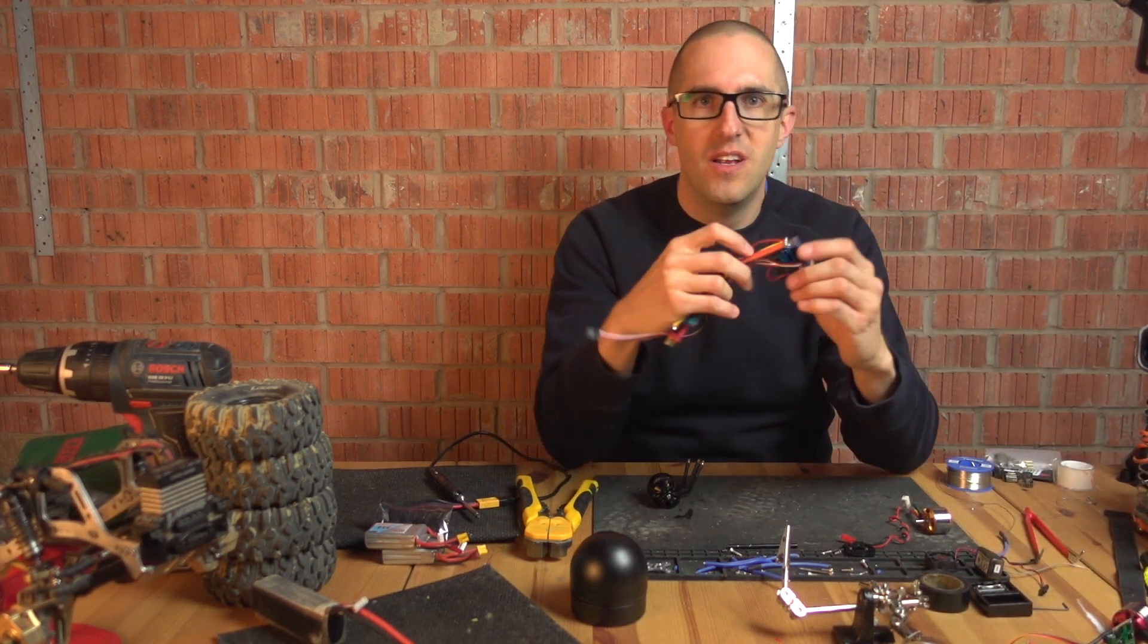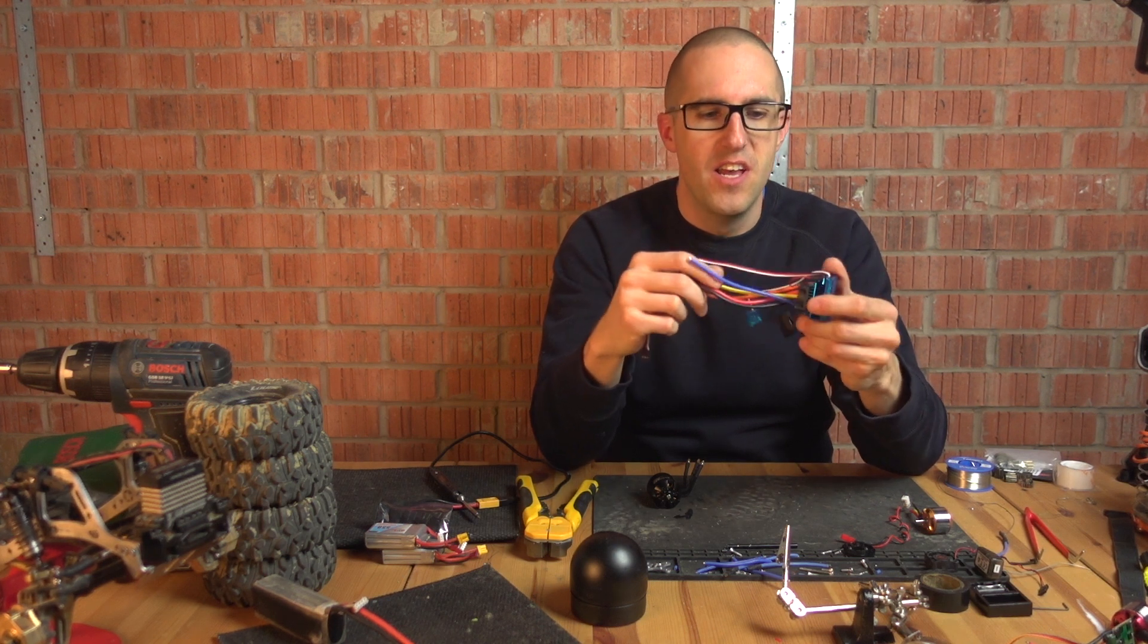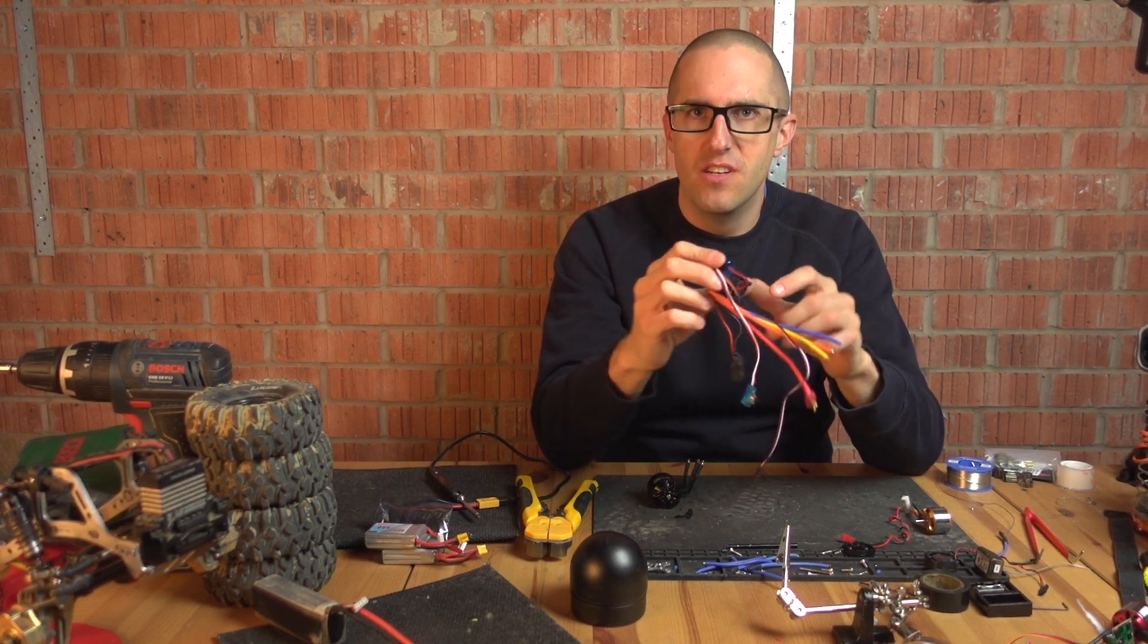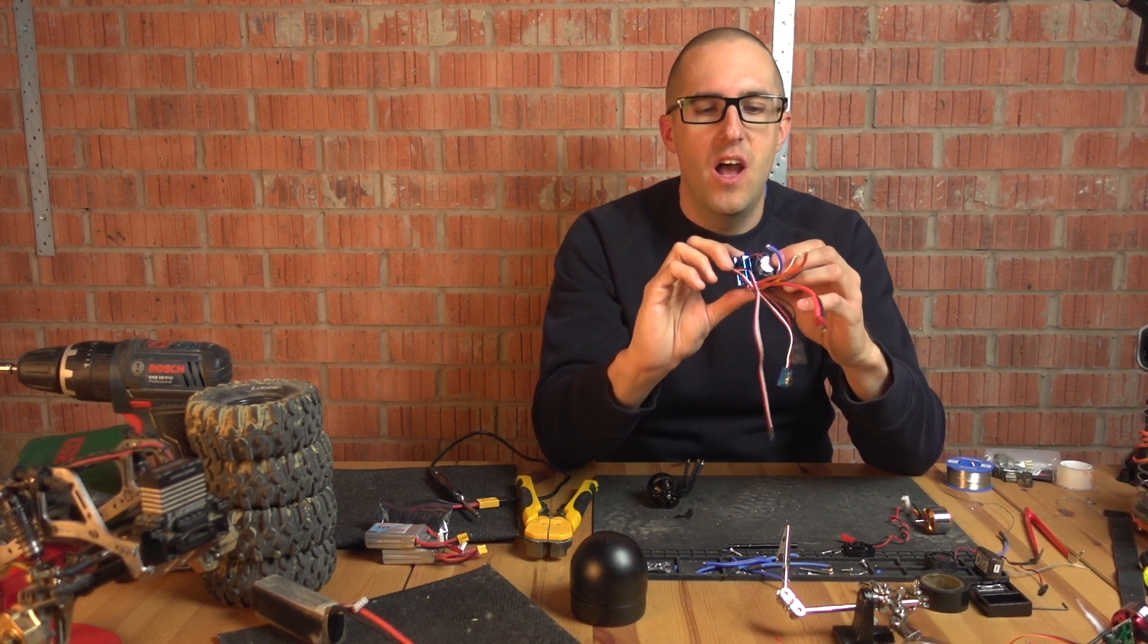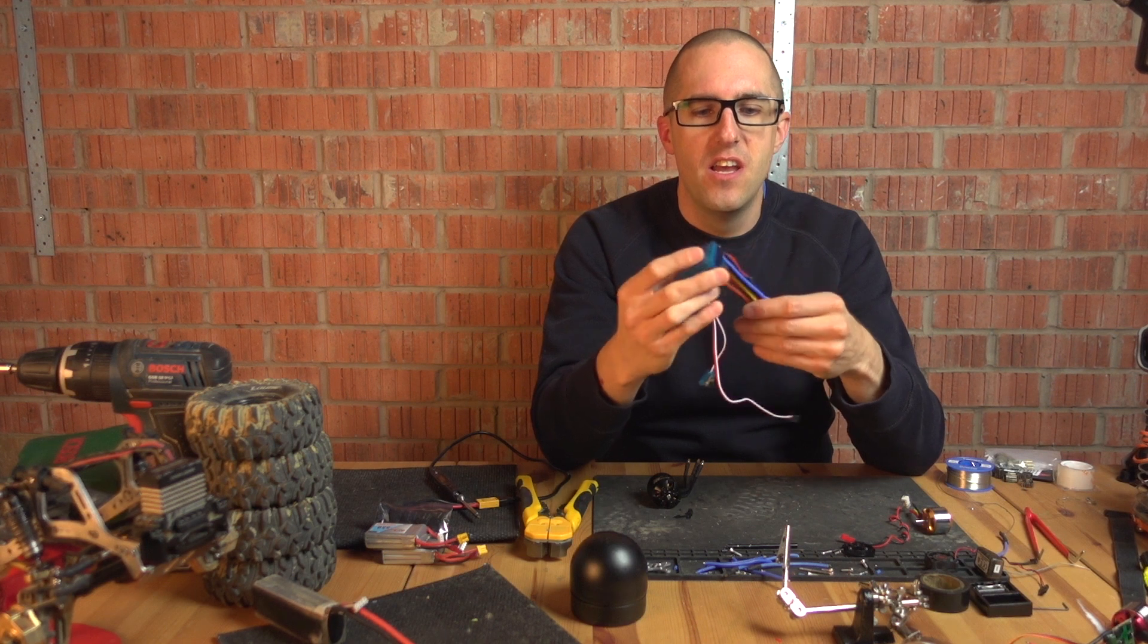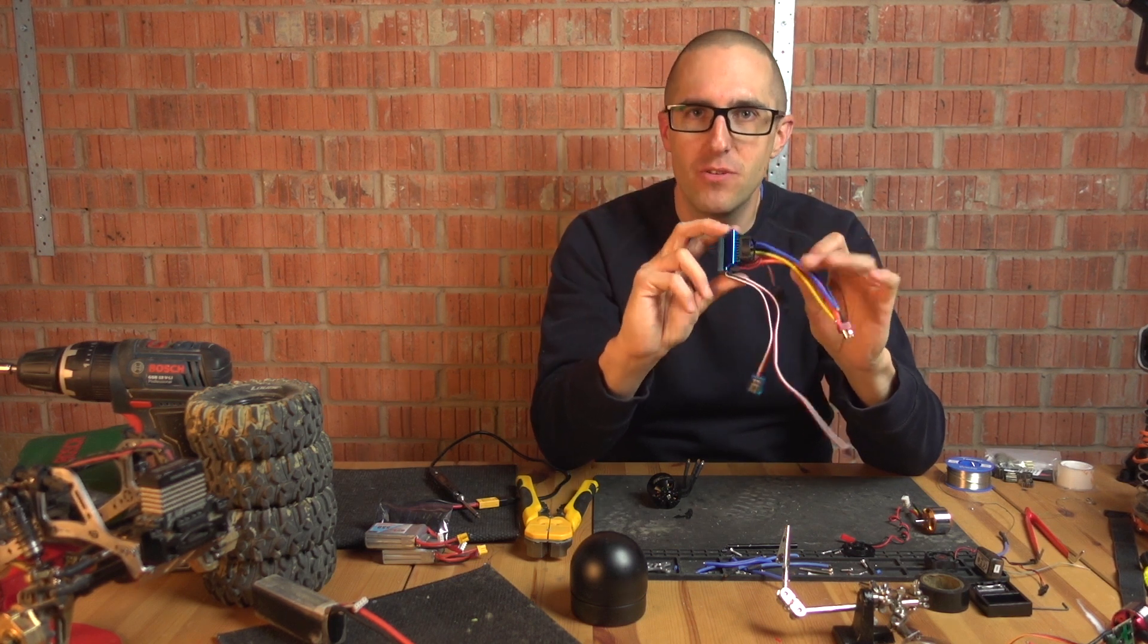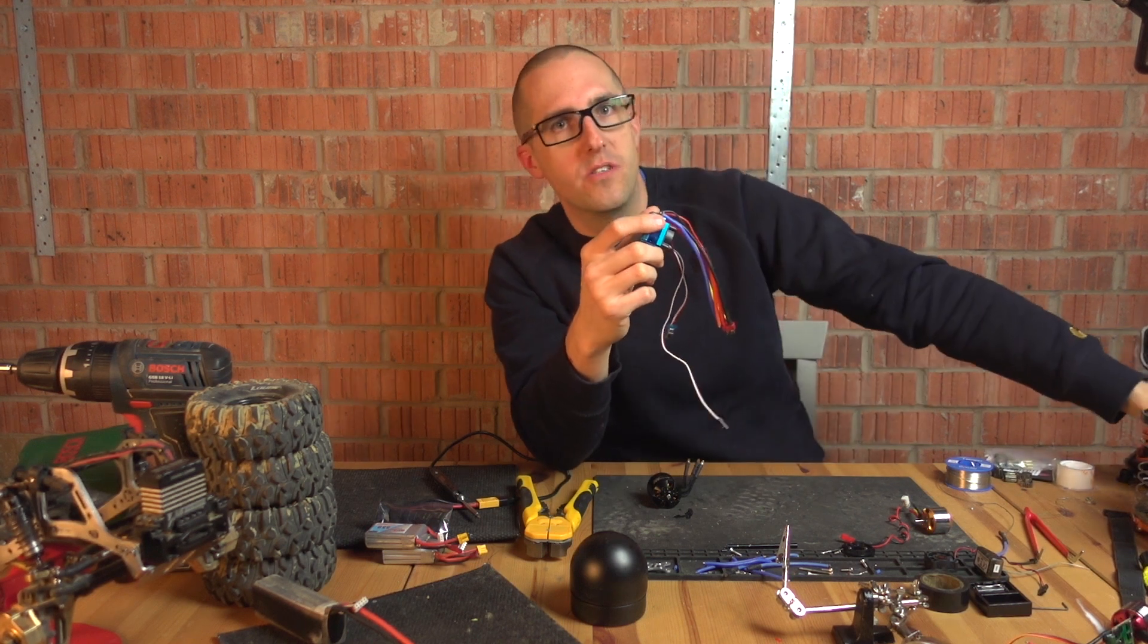So we have one of these, this is a car ESC. This is the T-sky, I think it's called the T-rex, and it's 120 amp brushless sensored and sensorless ESC. It costs about 20 pounds off amazon, so I'm not expecting miracles but I do know I can program this with a hobbywing program card.